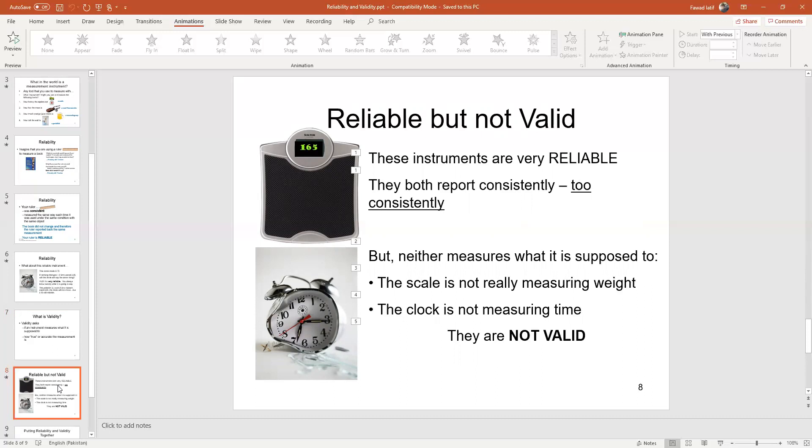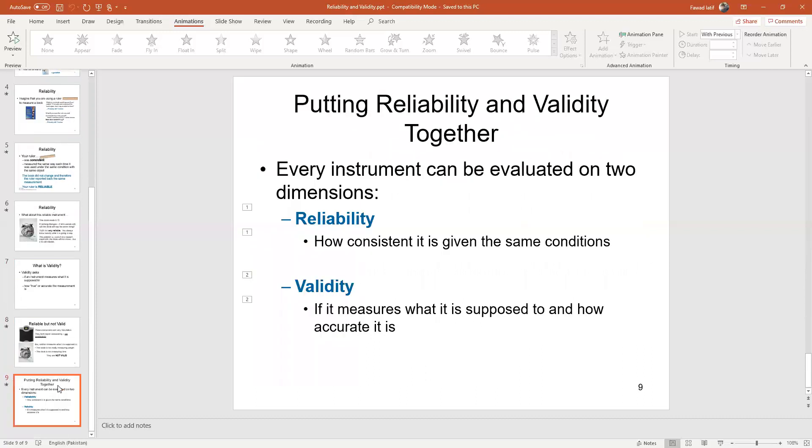If an instrument is valid, it is obviously reliable. But if an instrument is reliable, this does not mean that it is valid as well. So every instrument can be evaluated on two dimensions: reliability and validity. Reliability is the consistency under the same condition with the same subjects.